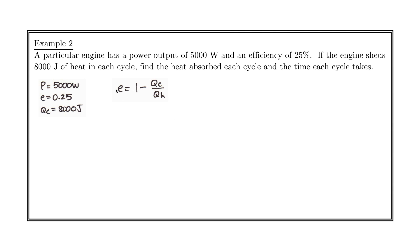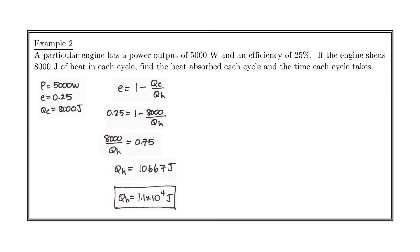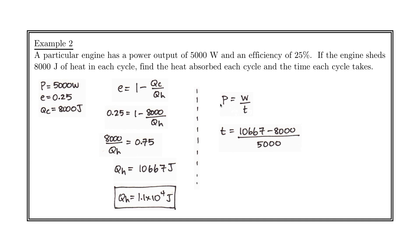Right away, we can use one of our efficiency formulas. Since we have QC and the efficiency, we can find QH. We make a substitution, rearrange, and solve, finding that QH equals 10,667 joules — rounding to significant figures, 1.1 times 10 to the 4th. For the time, we use the power expression. Once I know QC and QH, I can find the work the engine does and sub into the rearranged power formula. The time each cycle takes is 0.53 seconds.